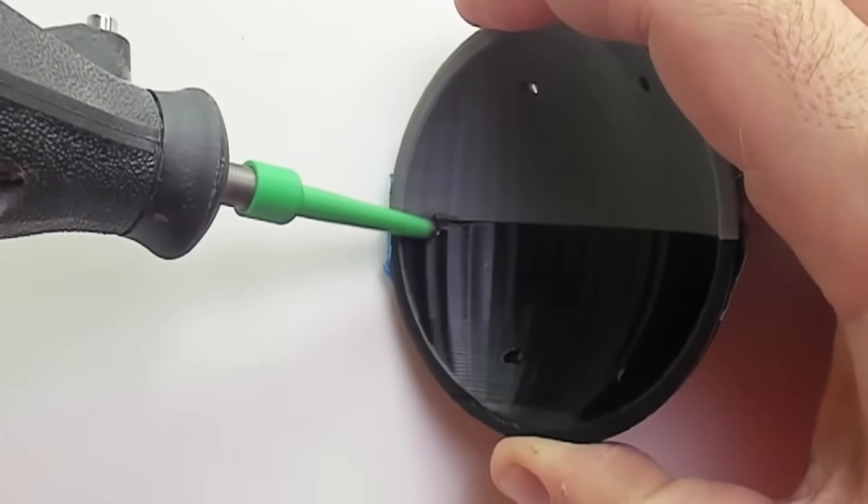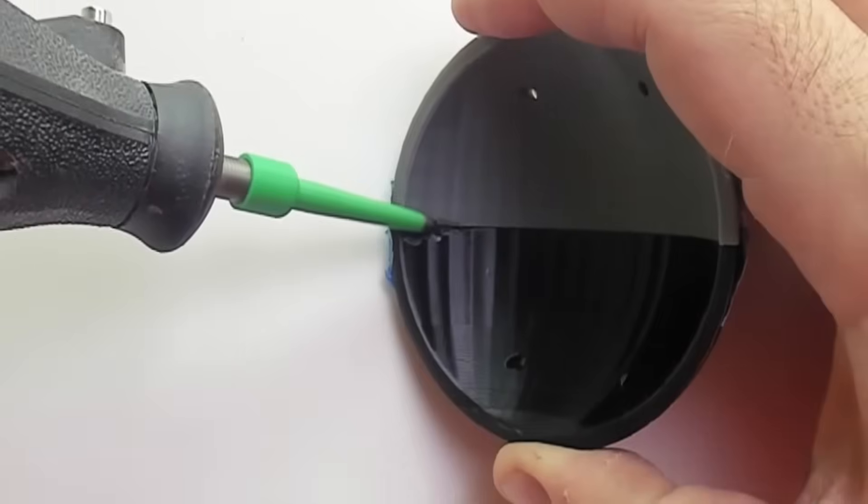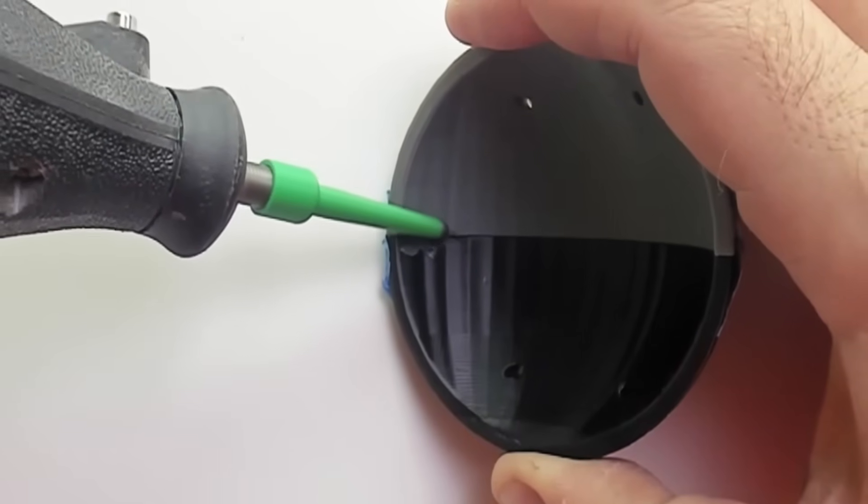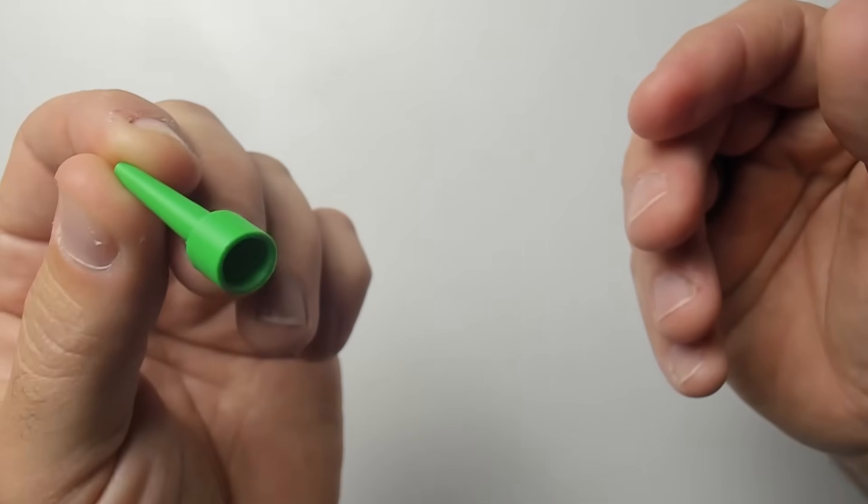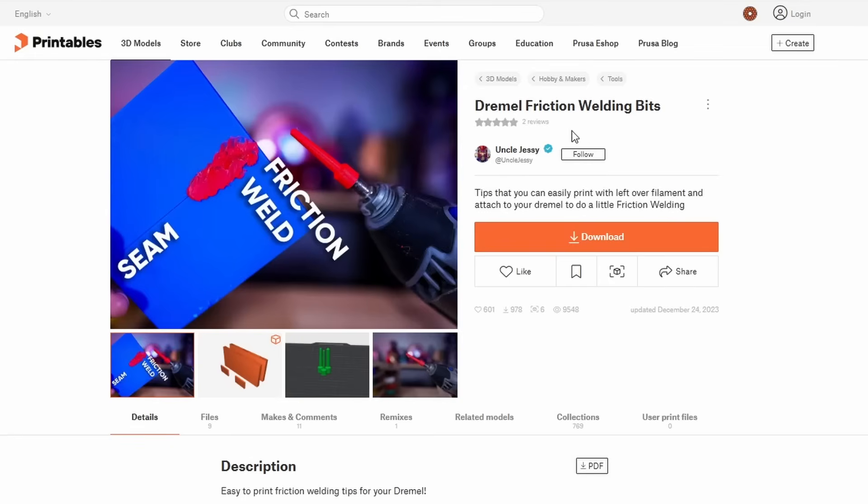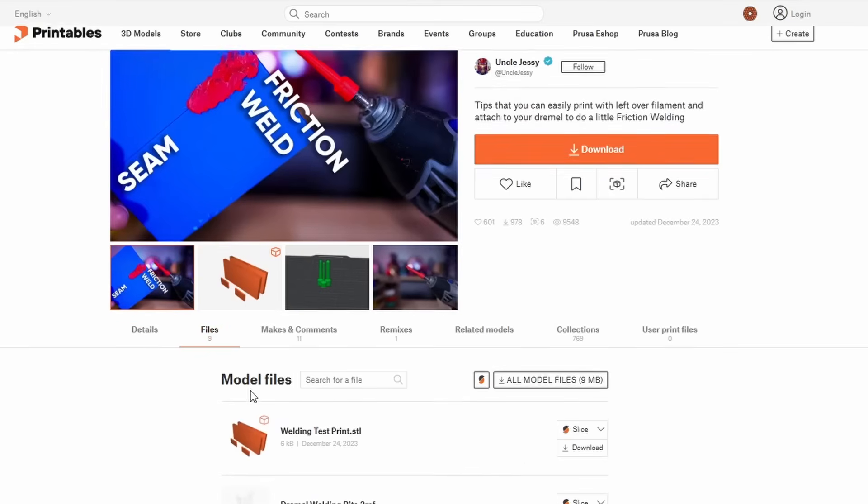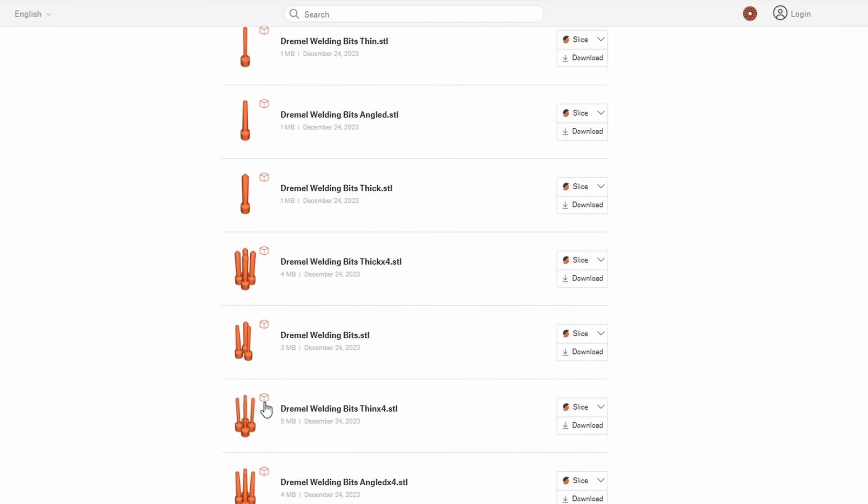For the second method I will bond the pieces together using friction welding. Friction welding is done with a Dremel or other rotary tool. First you need to print some of these nubs or bits or whatever you want to call them. The files are available on printables and were made by Uncle Jesse. Since they're small it's a good way to finish off your rolls of leftover filament.